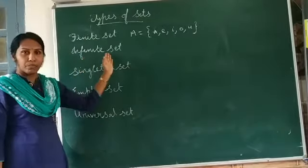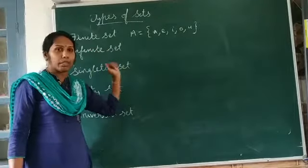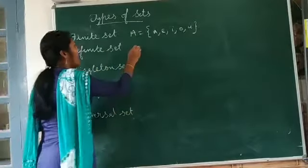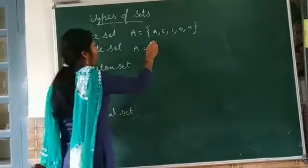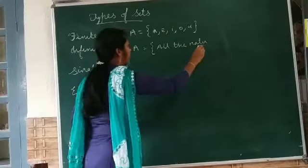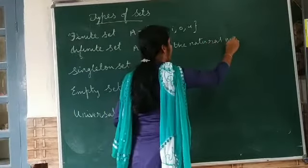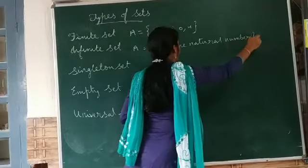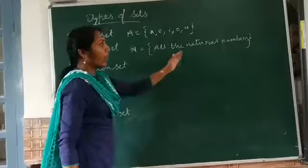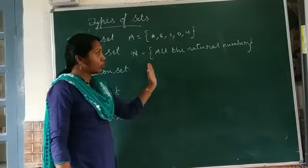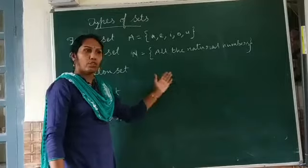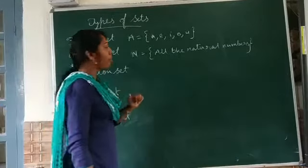Another one is infinite set. In an infinite set, the number of elements are not limited, or we cannot find out the number of elements in an infinite set. For example, A is equal to the set of all the natural numbers. We usually denote the natural numbers by N. So, N is equal to all the natural numbers, W is equal to all the whole numbers, I is equal to all the integers, set of all the prime numbers, set of all the composite numbers — all these are examples of infinite sets.